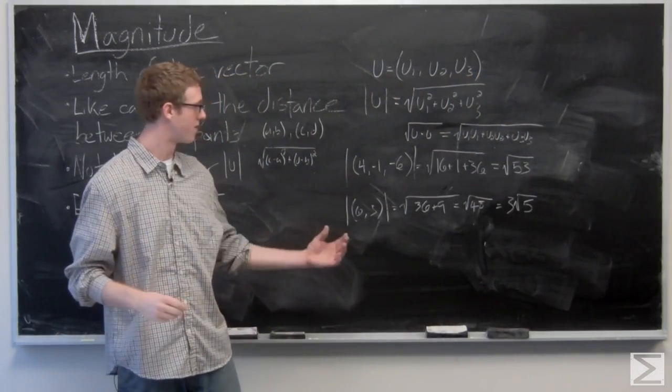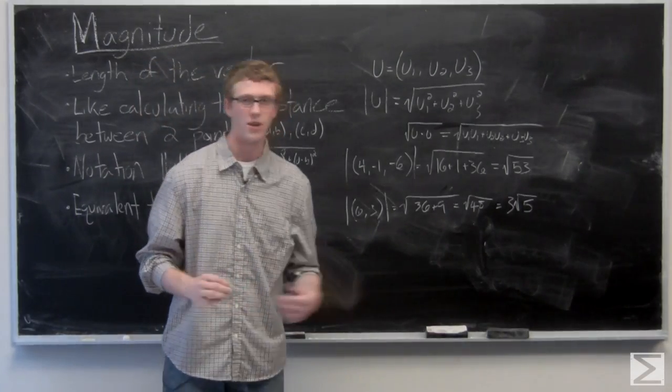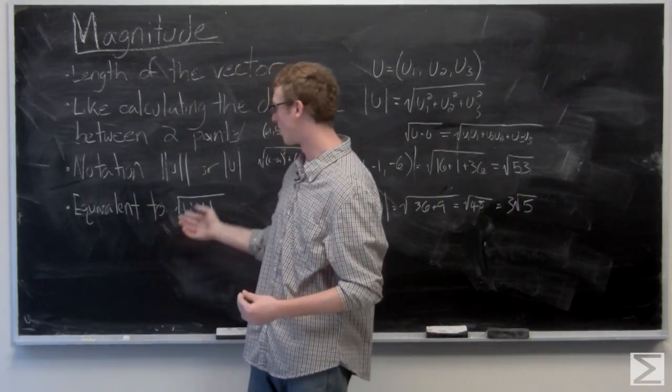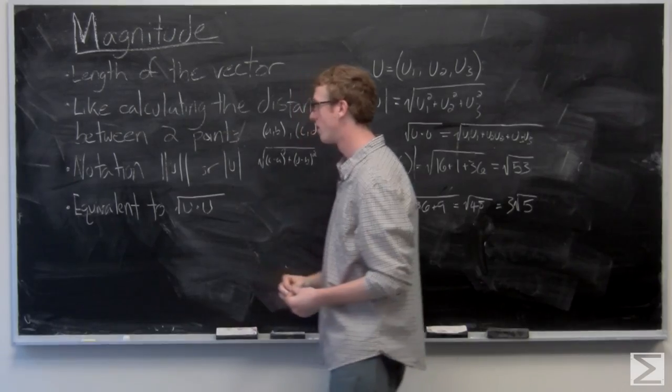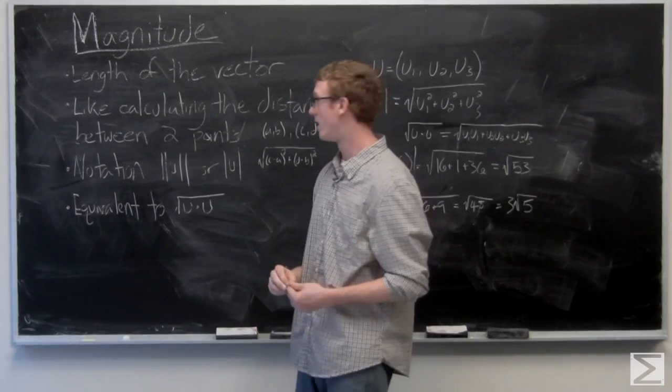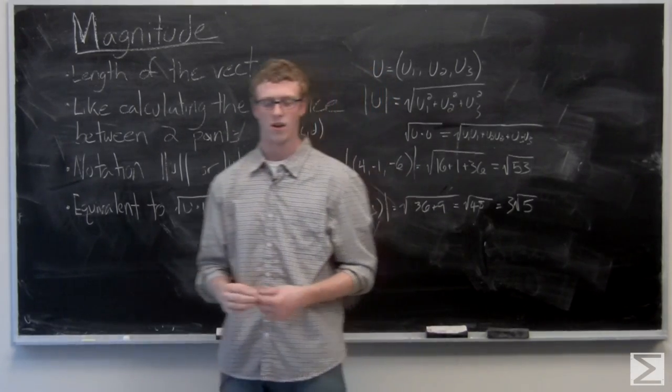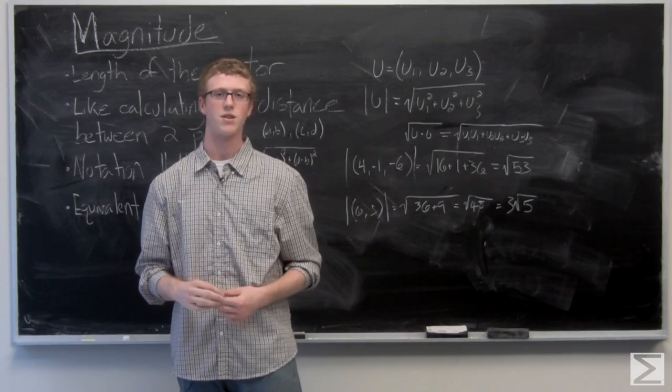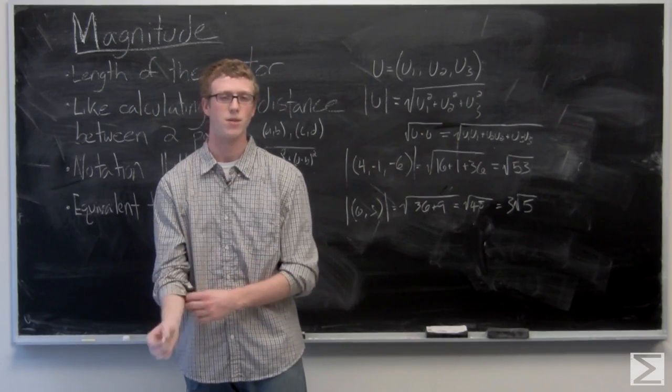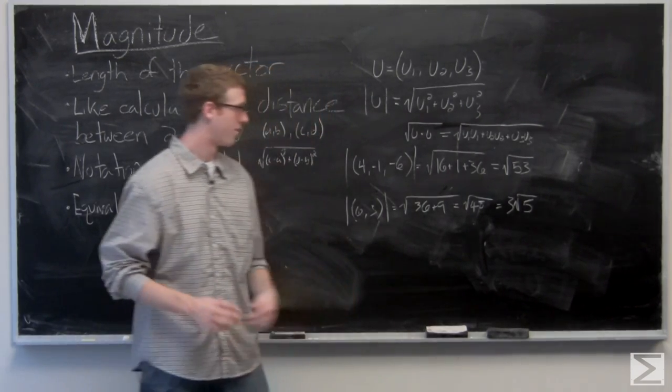So we've taken a look at magnitude of vectors. It's very easy to find equivalent to a vector dotted with itself. Notate it with the bars around it. We're going to go ahead and take a look in a different video at unit vectors. Magnitude is going to be very important in finding unit vectors.